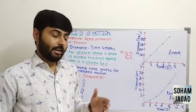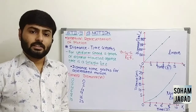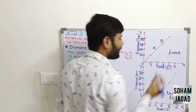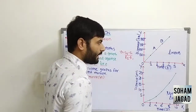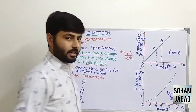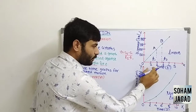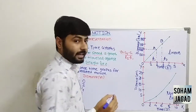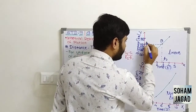Now let us see what we can derive from this graph. We can derive the average speed of the object. Let us take two points, point A and point B. At point A, the starting time T1 is 2 hours, and at point B, the ending time T2 is 3 hours. At the 2nd hour, distance S1 is 100 km, and at the 3rd hour, distance S2 is 150 km.